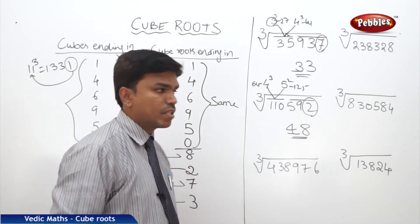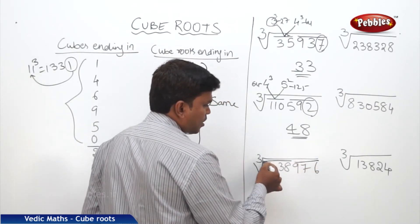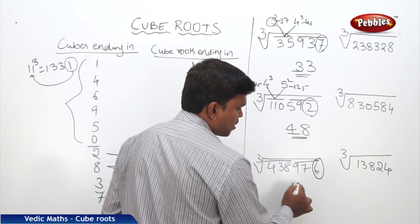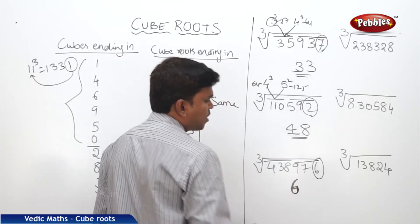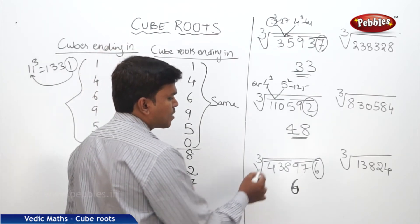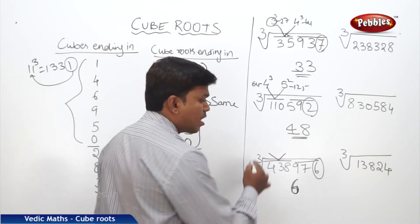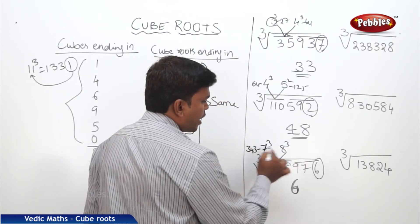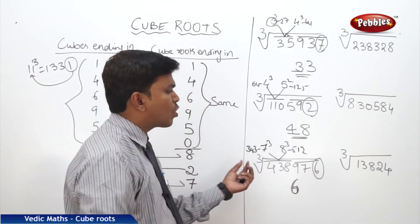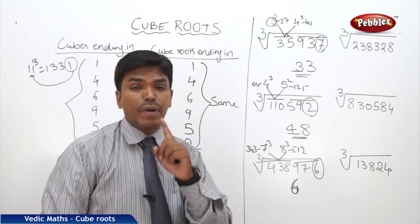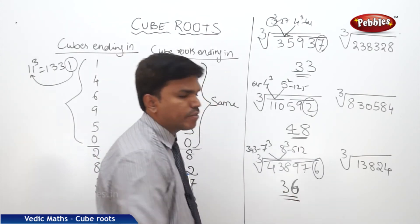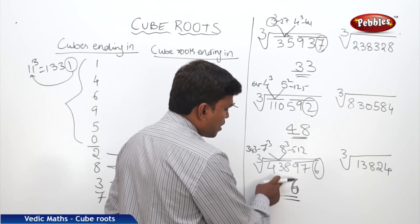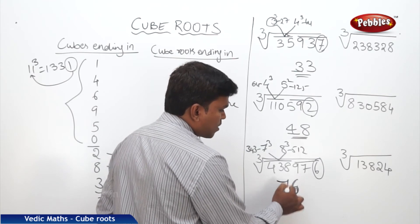The first problem: partition into 3 and 3 digits from the right. The cube number ends in 6, so the cube root should also end in 6. The second partition is 438. The number 438 comes between 7 cubed (343) and 8 cubed (512). We always take the lesser number, which is 7. So the answer is 76.